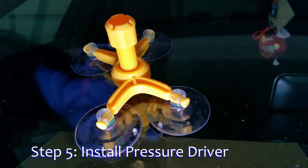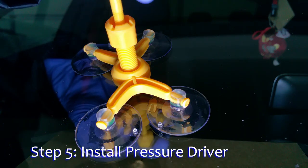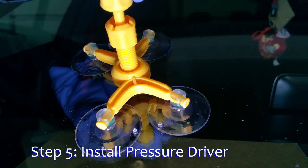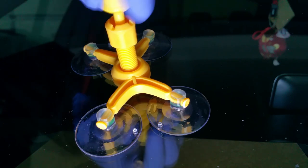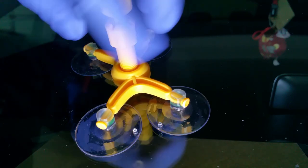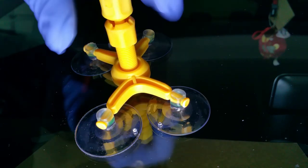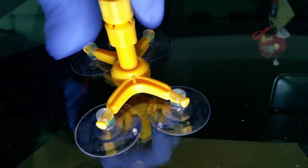Screw the pressure driver clockwise into the chamber. Tighten until the pressure driver is almost all the way in. Check from inside the car that the damage is being filled with resin. If needed, tighten the driver further to push more resin in.